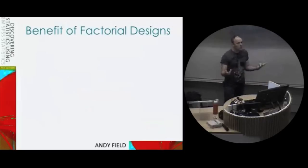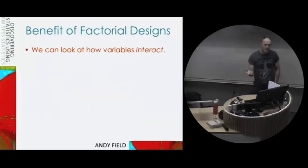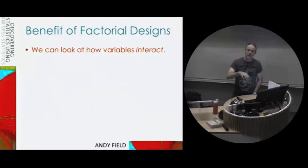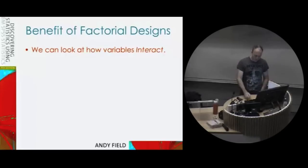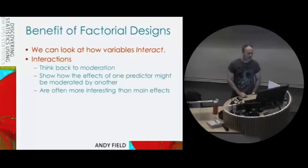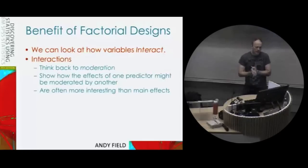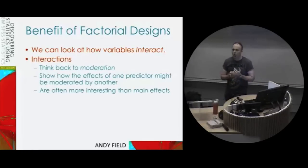Why would we do a factorial design? Why make things more complicated? The main reason is because we can look at how our predictor variables — our independent variables — interact with each other, and this is a really powerful tool. This goes back to the idea of moderation that we dealt with earlier in the course. Interactions between variables show up moderation effects, where one independent variable has an impact on the effect of the other independent variable. These moderation effects are more often than not more interesting than looking at the effect of a variable in isolation.